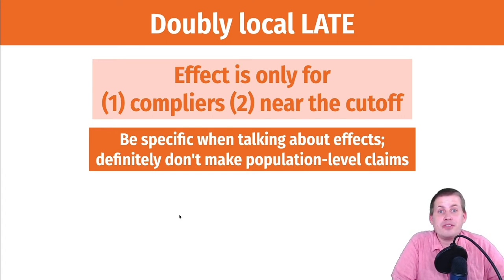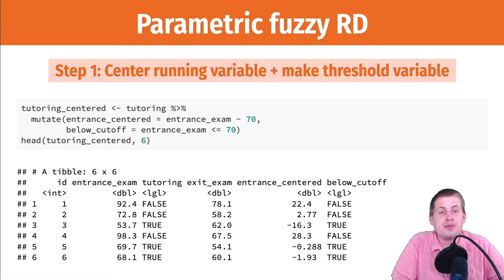So how do you do fuzzy regression discontinuity with R? It's basically the same process that we did before. You can either do it parametrically or non-parametrically. So parametrically means you have a regression equation, just like a regular linear regression. The only difference is instead of using LM for a linear model, you use IV robust for an instrumental variables model.